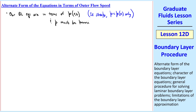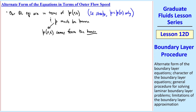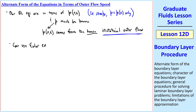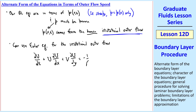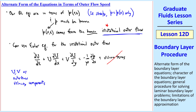Pressure must be known in order to solve the equations. Pressure must come from the known irrotational outer flow — we have to solve the outer flow first, then apply the boundary layer equations. We can use the Euler equation to solve for the irrotational outer flow. The Euler equation is the same as the Navier-Stokes equation but without the viscous terms, which go away by our approximation of irrotationality. Note also that we're using U and V as the outer flow velocity components.